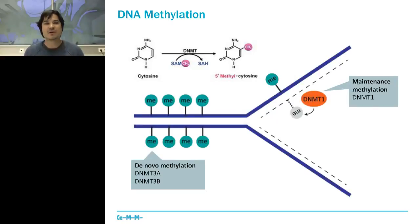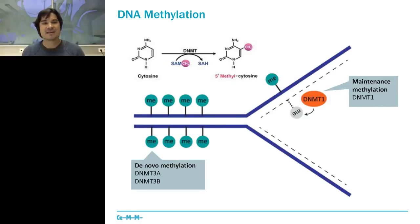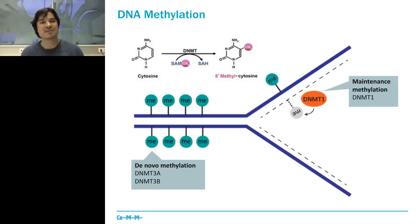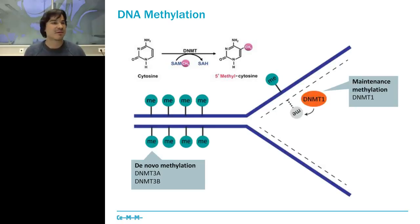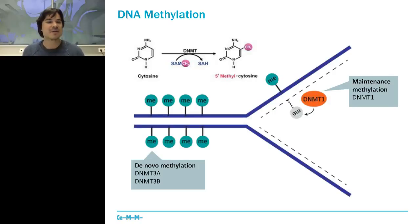Looking in more detail at what DNA methylation is: cytosine bases become methylated at carbon position five to form 5-methylcytosine. This reaction is catalyzed by enzymes called DNA methyltransferases. In humans, there are two types: enzymes that catalyze de novo methylation — DNMT3A and 3B — which set up new methylation patterns during development and biogenesis; and a second process called maintenance methylation, catalyzed by DNMT1, which propagates methylation patterns from the parental strand to daughter cells during division.